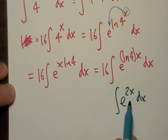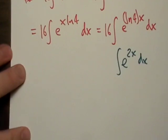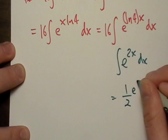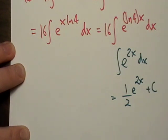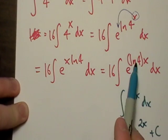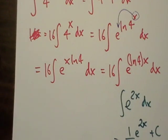E raised to the 2x, and we know how to take the anti-derivative of that. That's just going to be one half e to the 2x plus c, right? So the only difference is that we have this log of four in here, and it's actually a constant.